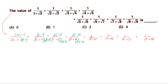For the next term (√6+√5), the conjugate is (√6−√5), so multiply and divide by (√6−√5). Then multiply the denominator by (√7−√6). For (√8+√7), the conjugate is (√8−√7), so multiply and divide by (√8−√7). For the last term (√9+√8), the conjugate is (√9−√8), so multiply and divide by (√9−√8).